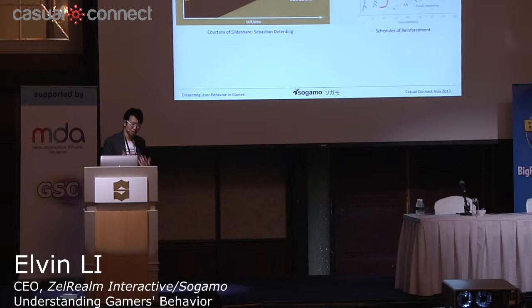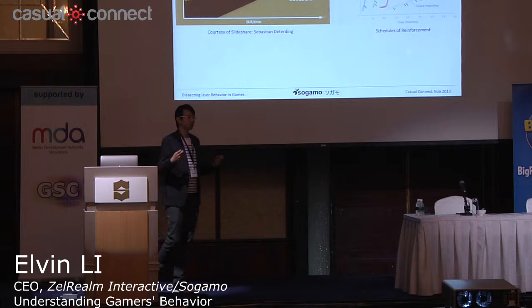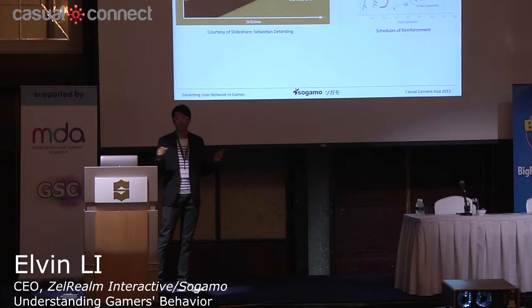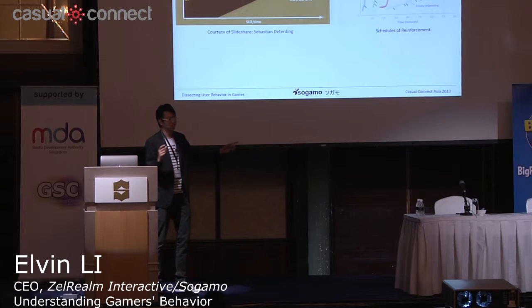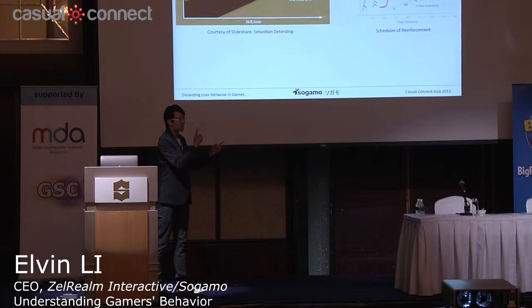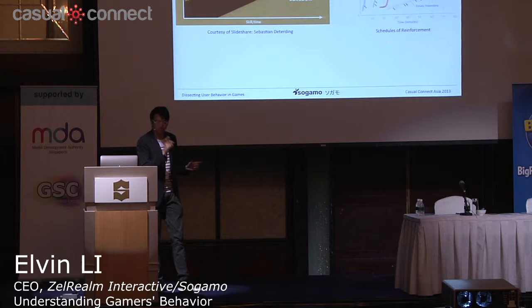What these guys did very well was learn how to play with users — managing fun effectively. They understand when a user would start to resist them as a game publisher. Resisting would mean reaching a point where you're too irritated to keep playing, because you've been asked to buy stuff over and over again. So they have specific data sets that help figure out when a person is getting irritated, triggering an alert in the game to say: don't ask this user to pay anymore, because this person is not going to fall for that trick.